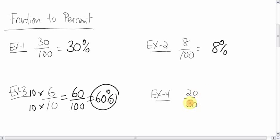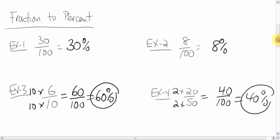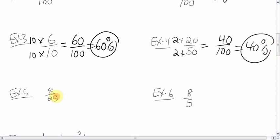20 over 50. How do you convert 50 into 100? No problem. How do you get that? You times 50 by 2. Do the same to the top. 2 times 20 is 40. 40 per cent is 40%. Do the same to the top. 4 times 8 is 32. 32 per cent is 32 per cent.